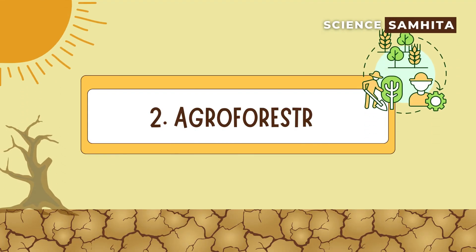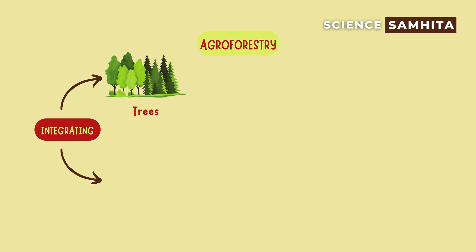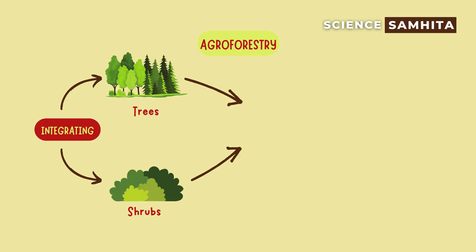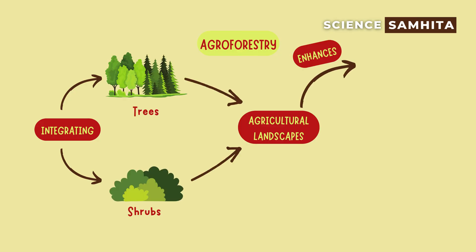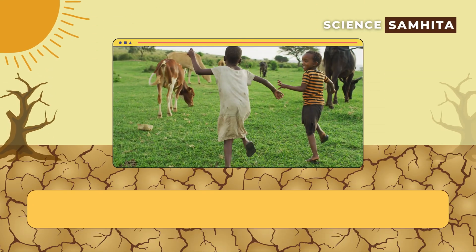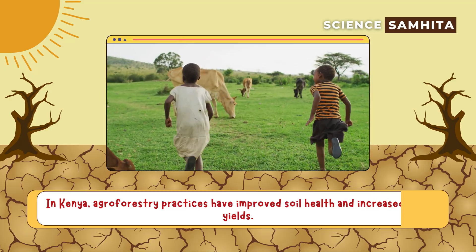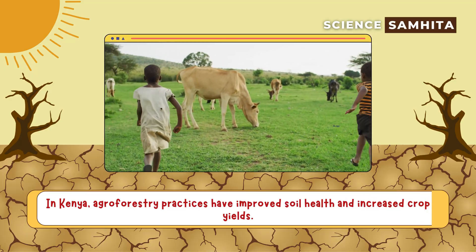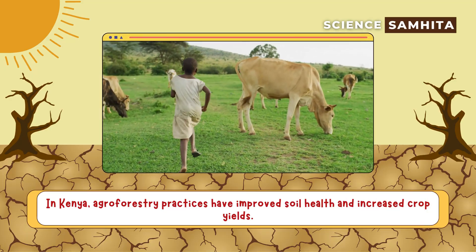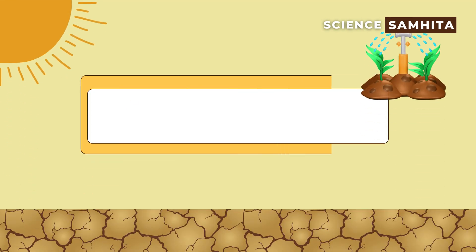Second, agroforestry. Integrating trees and shrubs into agricultural landscapes enhances soil fertility and reduces erosion. For example, in Kenya, agroforestry practices have improved soil health and increased crop yields.